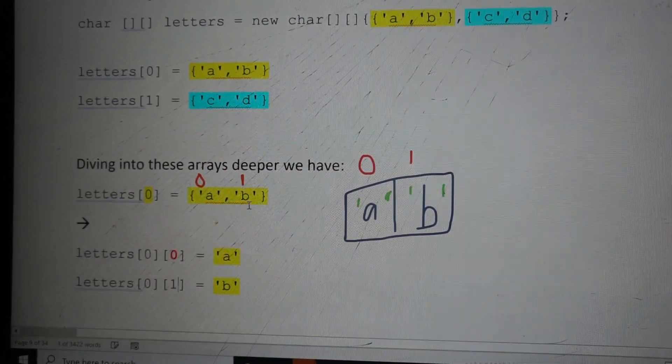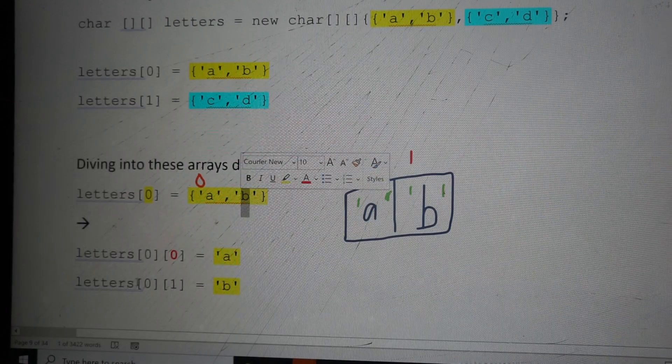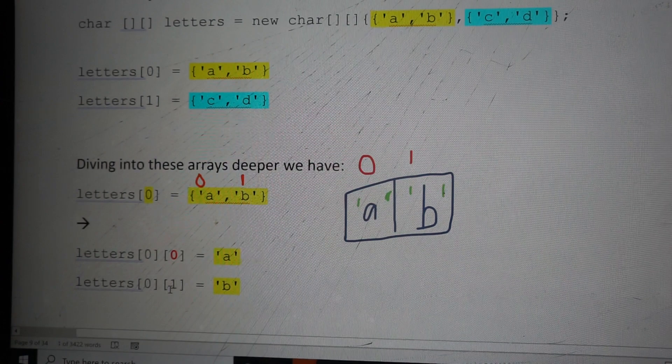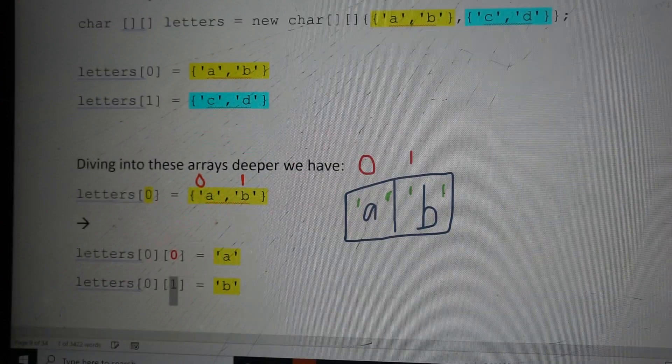Similarly for B, it's the next element at index 1. So we have to go to letters[0]. This takes us to this yellow array, AB. And then we take the first one, and that is our B.